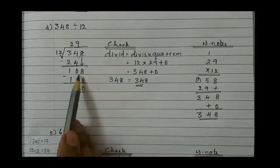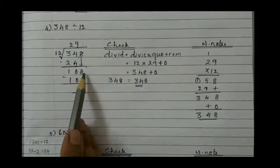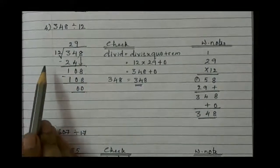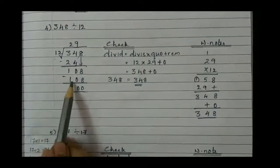Then bring the 8 down, so it becomes 108. So when do we get 108 in table 12? 12 times 9 is 108.